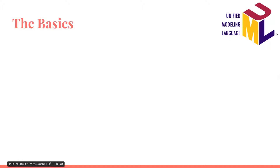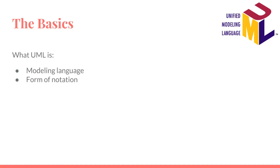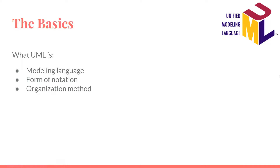Let's look at the basics of what UML is and is not. First, what UML is. UML is a modeling language, used by developers to conceptually or visually understand the design of a software or product. UML is a form of notation — a collection of symbols put in a diagram format, allowing easy understanding. And lastly, UML is an organization method. By creating these diagrams, users of the UML language can easily see the order of things and how a system works together as a whole.